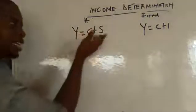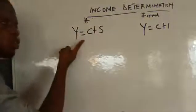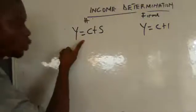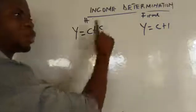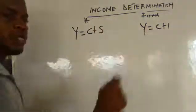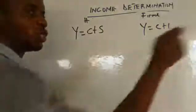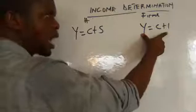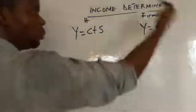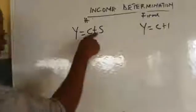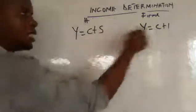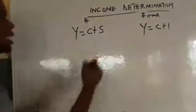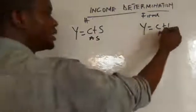Why is the household function aggregate supply? Because while part of income is consumed, the remaining saving is the supply of money — put into financial institutions, which then give it to investors. Why is the firm function aggregate demand? Because the investment demands for the money given to the bank by households. That is why we say this is aggregate supply and this is aggregate demand.